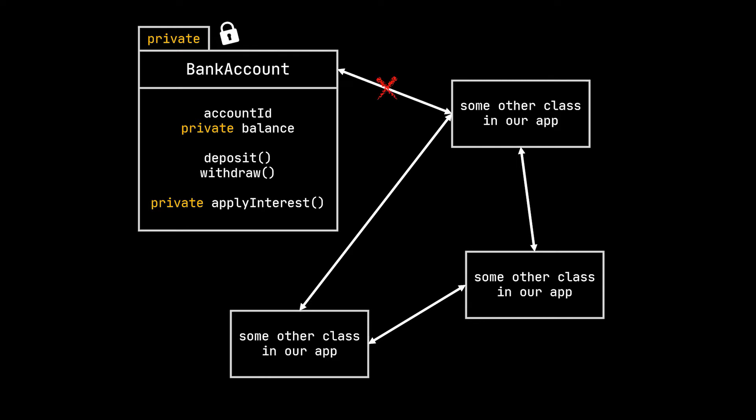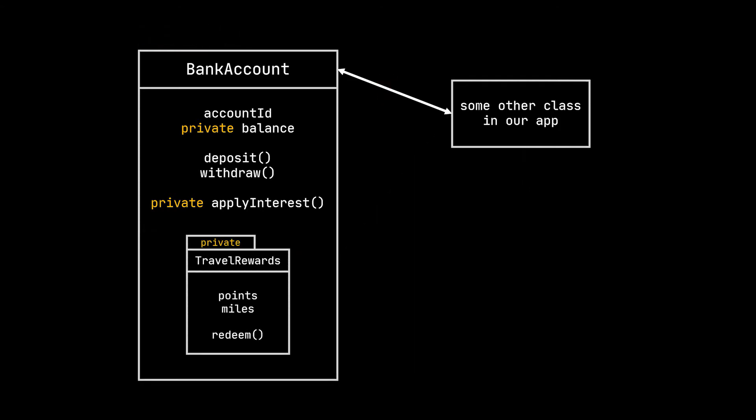However, you can declare a class as private if this class is an inner class. So if I were to create another class inside the BankAccount class, let's say a TravelRewards class, and we know that this class will only be used by our BankAccount class, then we can set the access to this class as private.